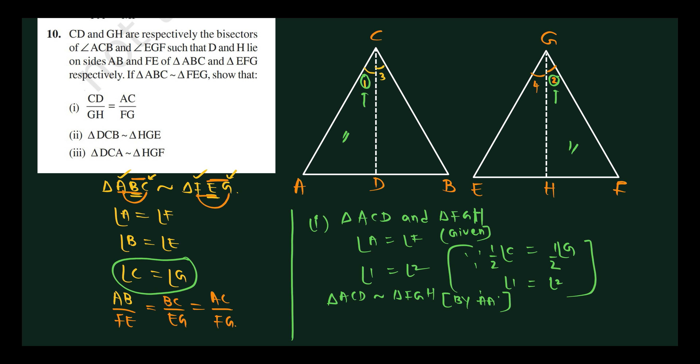From this, CD by GH equals AC by FG — because corresponding sides of similar triangles are in equal proportion.